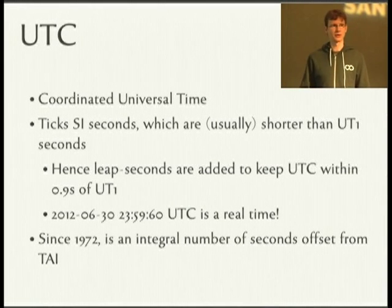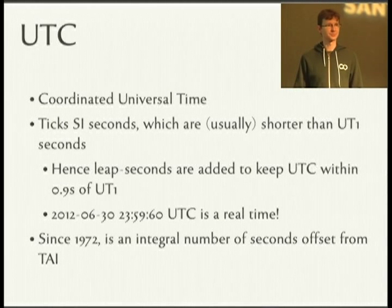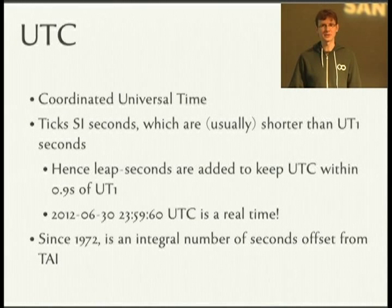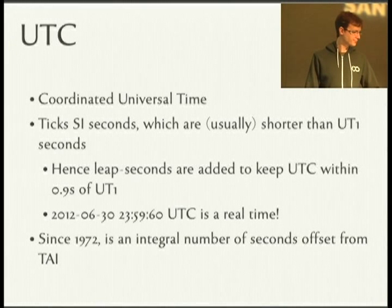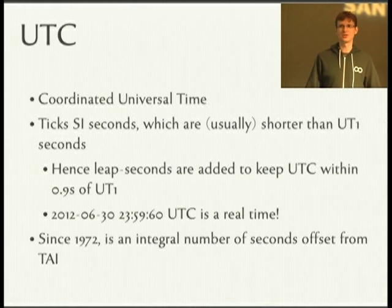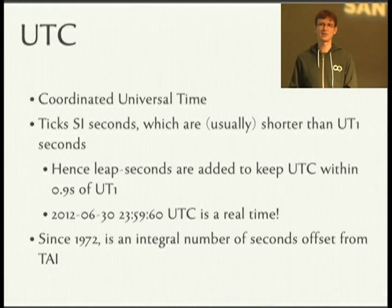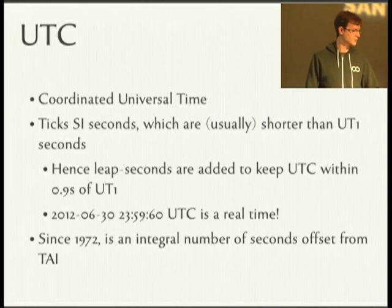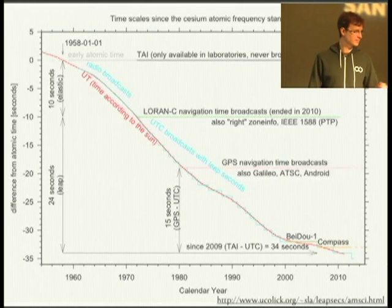Because the rotation of the Earth is so unpredictable, leap seconds aren't announced more than six months in advance. So you can't know what is going to be a million seconds in the future — we don't know how quickly the Earth is actually going to be turning. But for six months you can tell, and historically we know what we actually did insert. Since 1972, UTC has been an integer number of seconds offset from TAI. Before that, there were fractional seconds and clock skewing and other funny things.